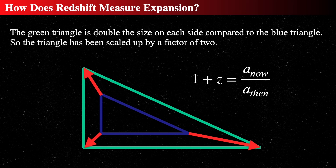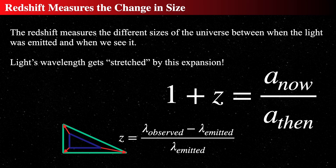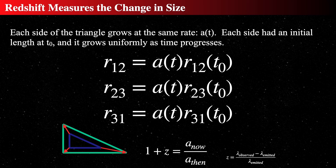The redshift is a direct relationship to the scale factor growth. We can associate the stretching of space-time with the wavelength of light — stretching space stretches the wavelength of light. The sides of the triangle grow as R₁₂, R₂₃, R₃₁, and the scale factor A grows as a function of time. So the distance between any two points grows as a function of time — that function of time is the scale factor A(t).